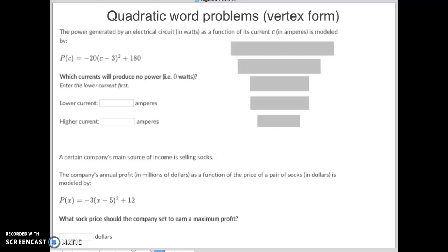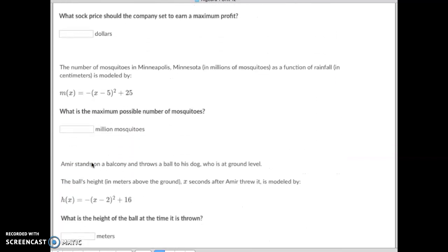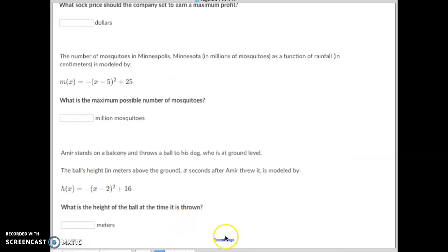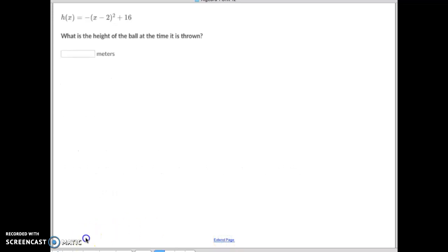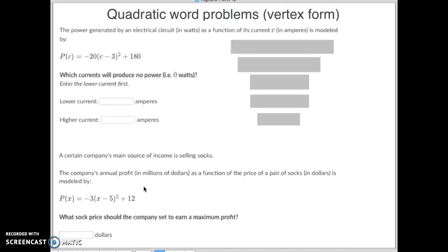This is called quadratic word problems in vertex form. They are asking you to retrieve different information from different problems, and there's four different problems. There's one, there's one there, there's one there, and a fourth one down here. In fact, I'm just going to make that a little higher so I can get to it. Now, what types of information are they looking for?